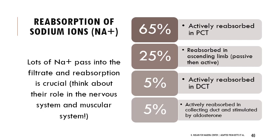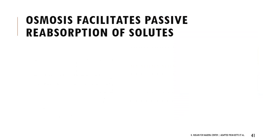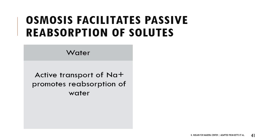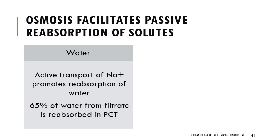Aldosterone stimulates reabsorption of sodium ions in the collecting duct, which in turn increases blood pressure. Osmosis — the movement of water — is also very important for establishing concentration gradients and allowing passive reabsorption of solutes. Active transport of sodium often promotes reabsorption of water by changing tonicities and drawing water out. There are also parts of the nephron that are only permeable to water due to aquaporins. About 65% of water from the filtrate is reabsorbed in the proximal convoluted tubule and a lot more in the descending arm of the loop of Henle.